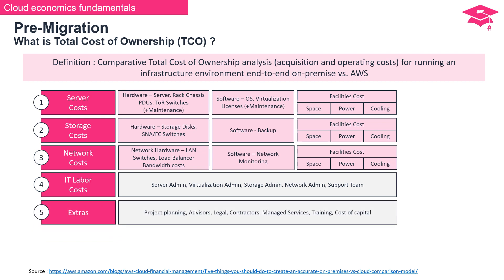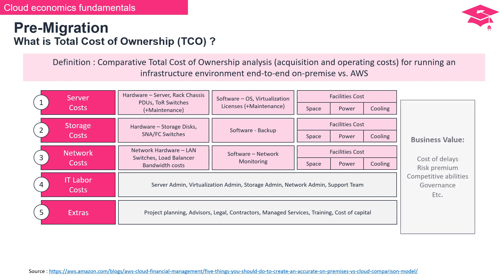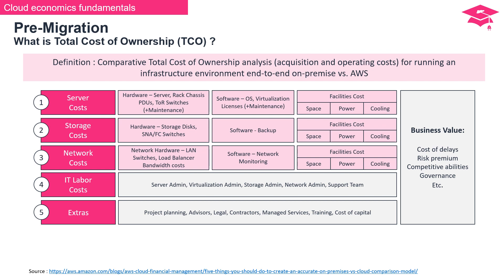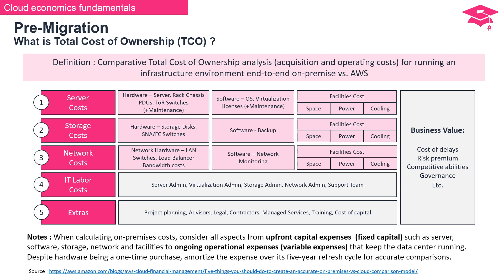The fifth cost component includes various extras, such as expenses related to project planning, advisors, legal consultations, contractors, managed services, training, and the cost of capital. There are also other costs associated with business value such as cost of delays, risk premium, competitive abilities, governance, and more. When calculating on-premises costs, consider both upfront capital expenses or fixed capital and ongoing operational expenses or variable expenses. For accurate comparisons, amortize hardware expenses over its five-year refresh cycle.